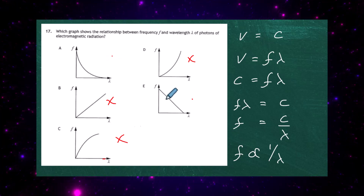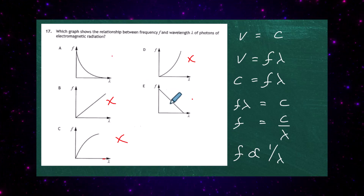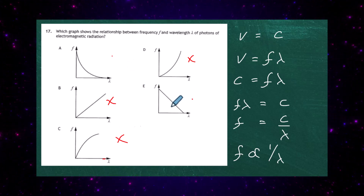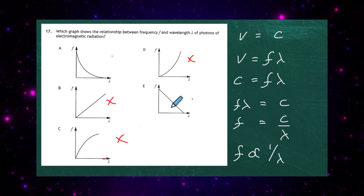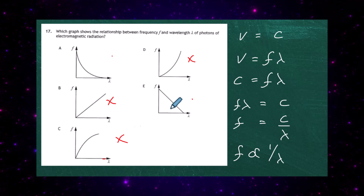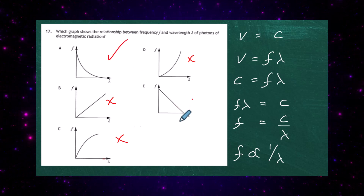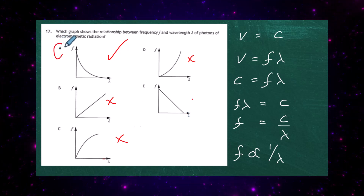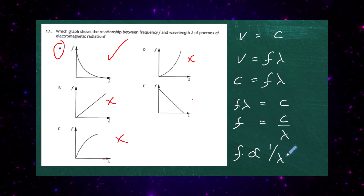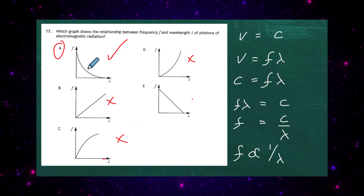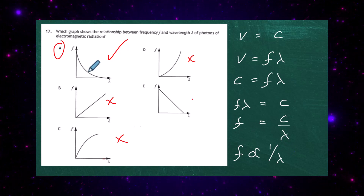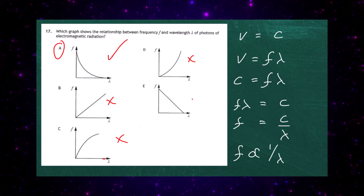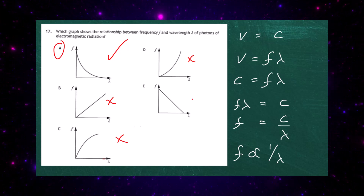From previous graph work, we know that when a quantity is inversely proportional to another, you get a specific hyperbolic curve. The answer to Question 17 is A, because frequency is directly proportional to 1 upon wavelength, and that graph represents the relationship of frequency being directly proportional to 1 upon wavelength. Now let's go and see what the simulation from Desmos graphs shows us.